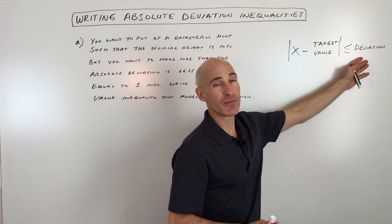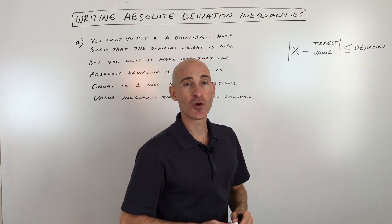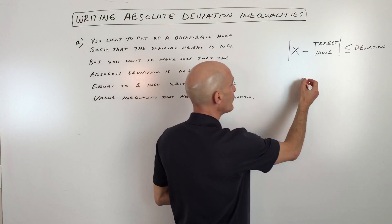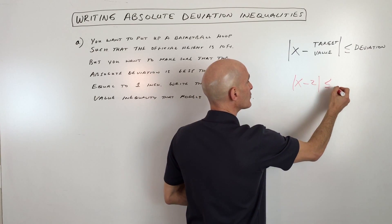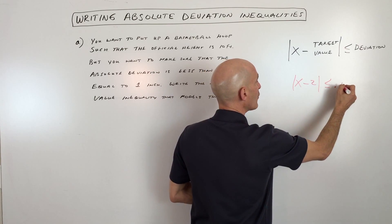This is how you would set up the absolute deviation inequality. So I'll show you another example. Let's say, for example, you have |X - 2| ≤ 0.1.